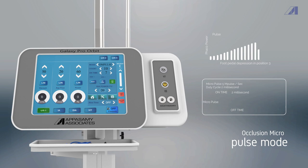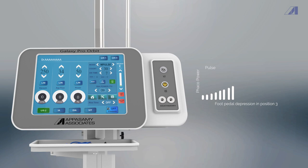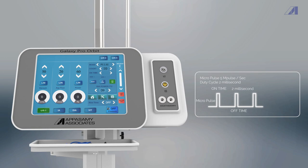The other important mode is Occlusion Micropulse mode. This is a combination of existing technology and latest technology as it uses both the Pulse mode and the Micropulse mode. This mode starts with the Pulse mode and once the cataract is occluded, the machine automatically goes to the Micropulse mode, reducing the treatment time significantly.